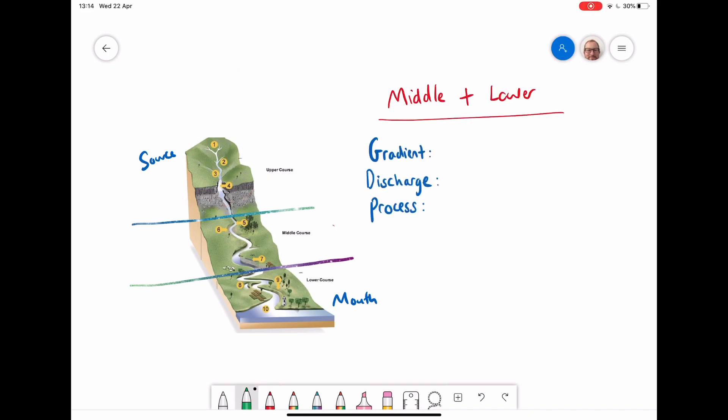So by the time the river gets into its middle and lower course, the gradient has become more gentle, less steep. And the discharge of the river has got much higher than the upper course. And the reason why is because by this point in the river, lots of tributaries have added their volume of water to the main river. And therefore, we have a higher volume of water in the river.